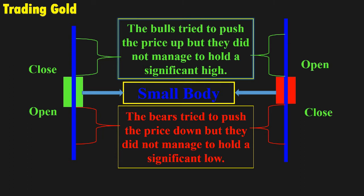So when spotting a spinning top candlestick pattern, look for a single candlestick with a short body between two long shadows. The color of the body is not important.